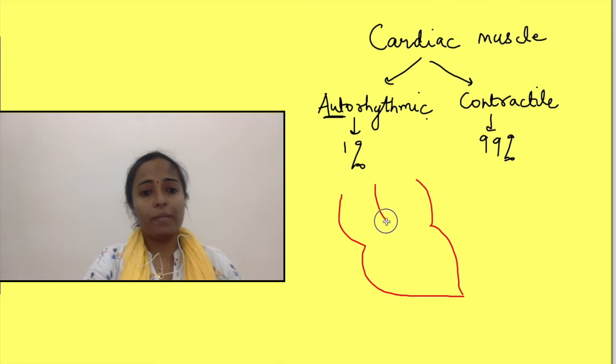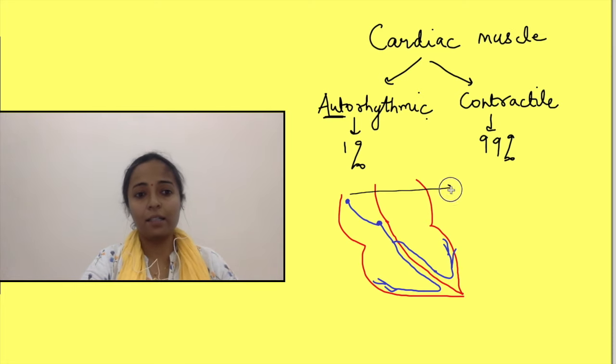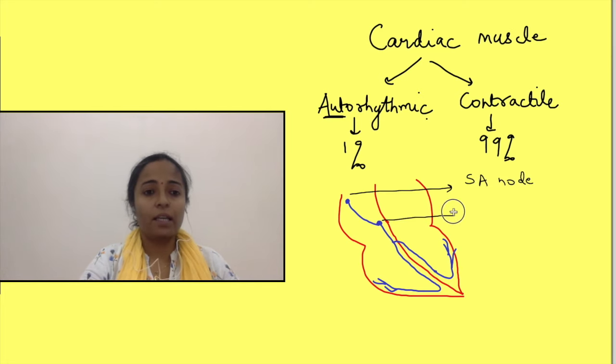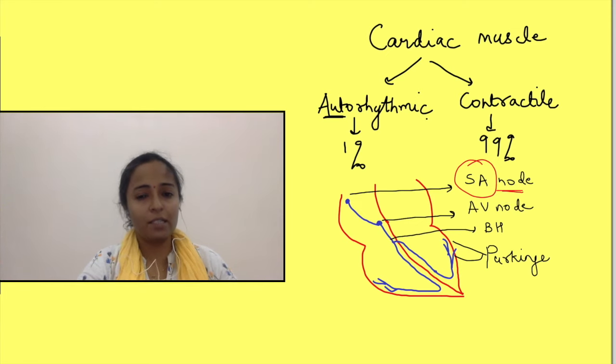The autorhythmic cells are part of the conducting system of the heart. In the conducting system, the cells having this automaticity are SA node, AV node, bundle of His, and Purkinje fibers. The rate of automaticity is highest in SA node, so we will talk about SA node action potential. The reason why this rate is highest in SA node, we will discuss a little bit later.